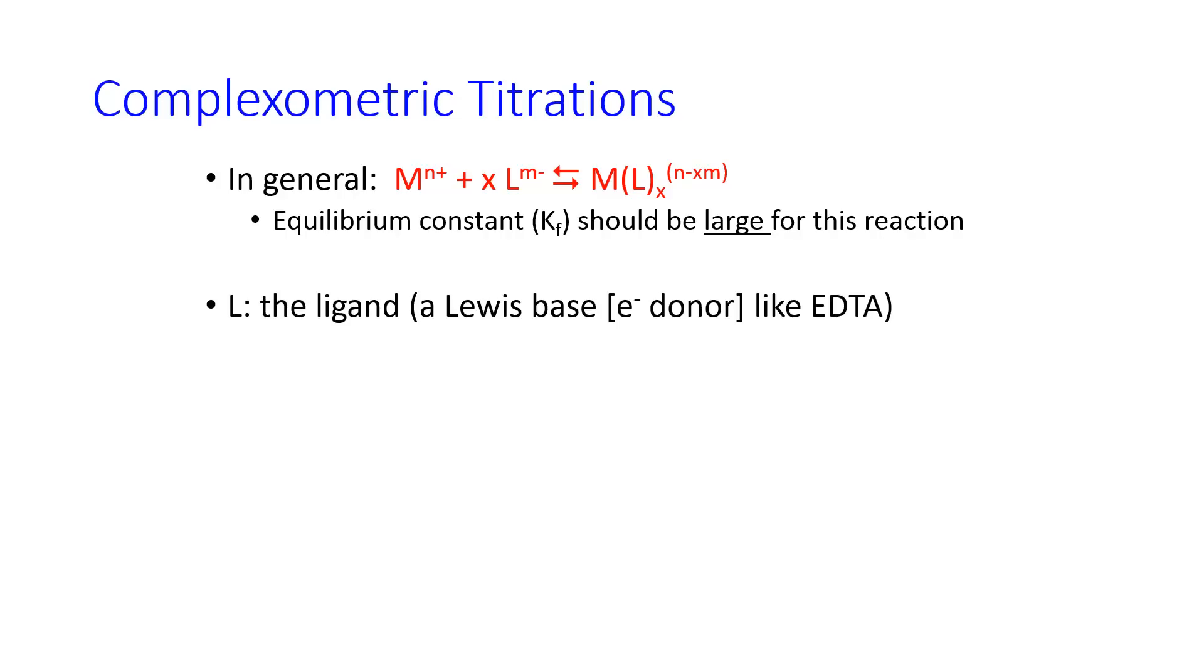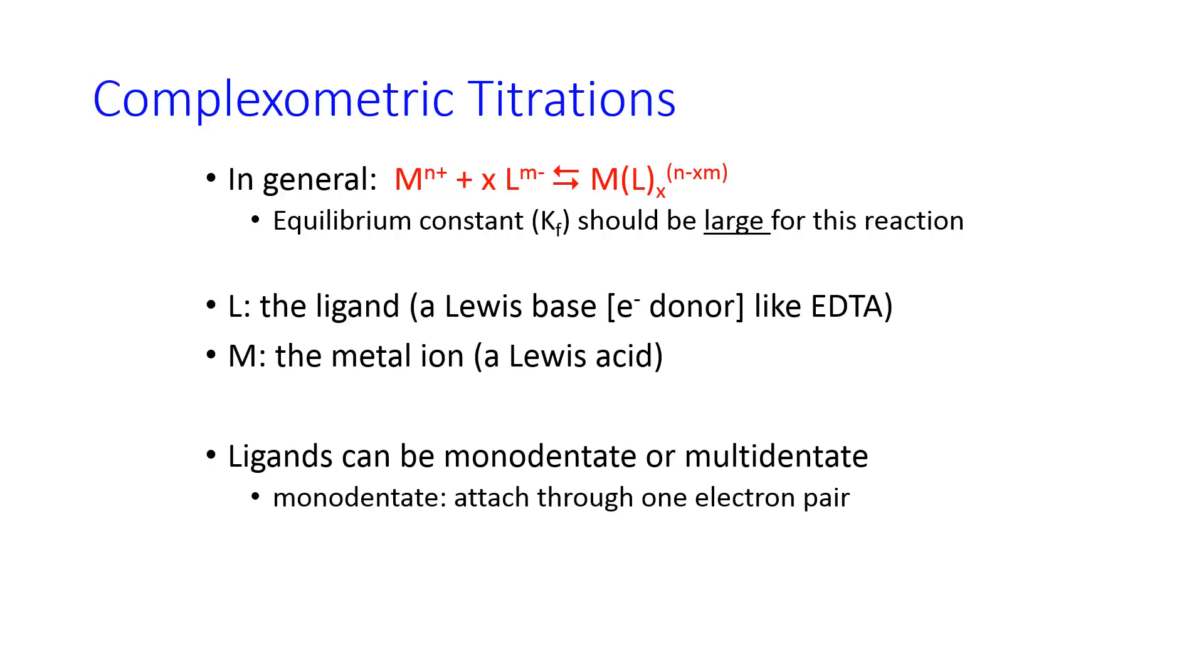L is the ligand and its Lewis base, an example of which is EDTA. And then the metal ion is the corresponding Lewis acid. Depending on how the ligand connects to the metal ion, we designate them as either monodentate or multidentate. Monodentate ligands attach to the metal ion through one electron pair, multidentate through more than one. EDTA attaches through six. It's a hexadentate ligand.